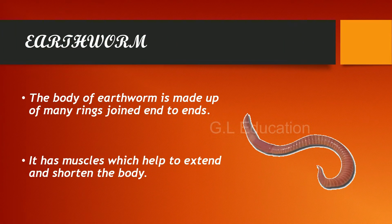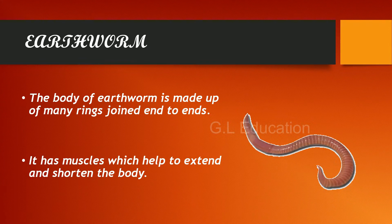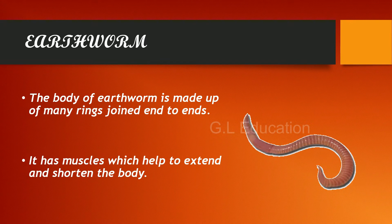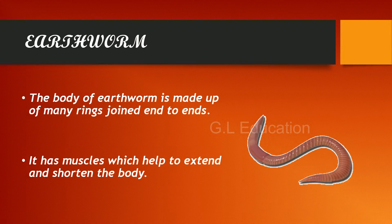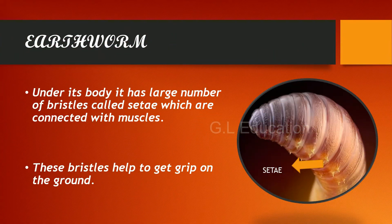Earthworm. The body of an earthworm is made up of many rings joined end to end. It has muscles which help to extend and shorten the body. Under its body, it has a large number of bristles called setae, which are connected with muscles. These bristles help it to get a grip on the ground.